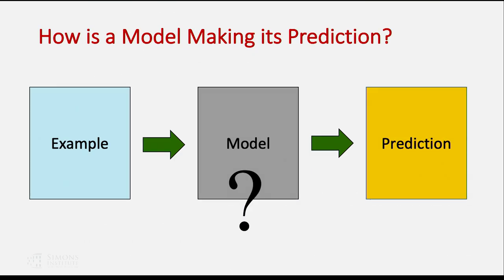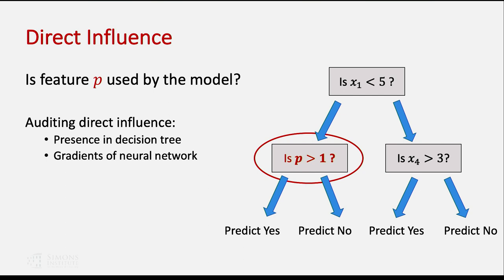Our general question is: we have a model making a prediction on an example, and we're trying to understand how it is doing this. The first natural way to think about it is what we call direct influence — is the feature p used when making my prediction? In a decision tree example, if I come across a node where I go a different direction based on my value of p and would make a different prediction, then p is having a direct influence. In a decision tree we look at nodes; in a neural network we might think about gradients. There are other methods in different contexts for what direct influence might mean.